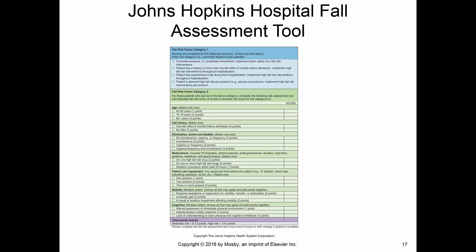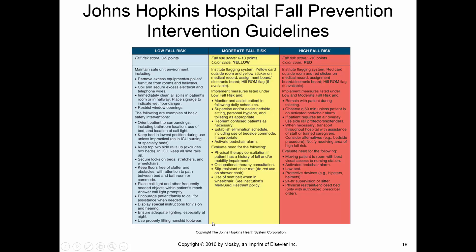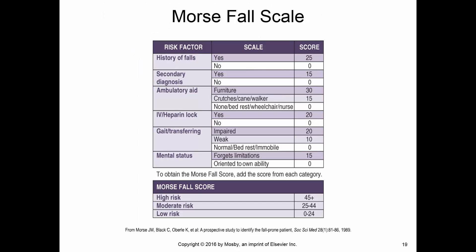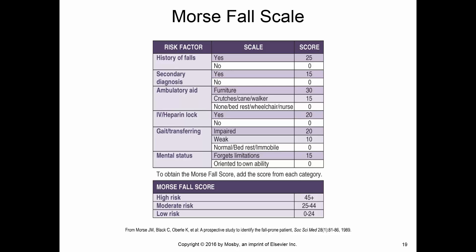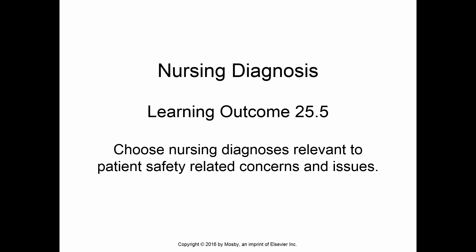I'm used to the Johns Hopkins Fall Assessment; I think the Morse Fall Scale is what they use at St. Pat's, but the Johns Hopkins they use at Community. Basically, you answer questions about your patient, your patient gets a score, you add up the score — if it's 6 to 13, moderate risk; above 13, high risk. Wherever you work, you'll be trained to use whatever risk assessment they use at that facility.